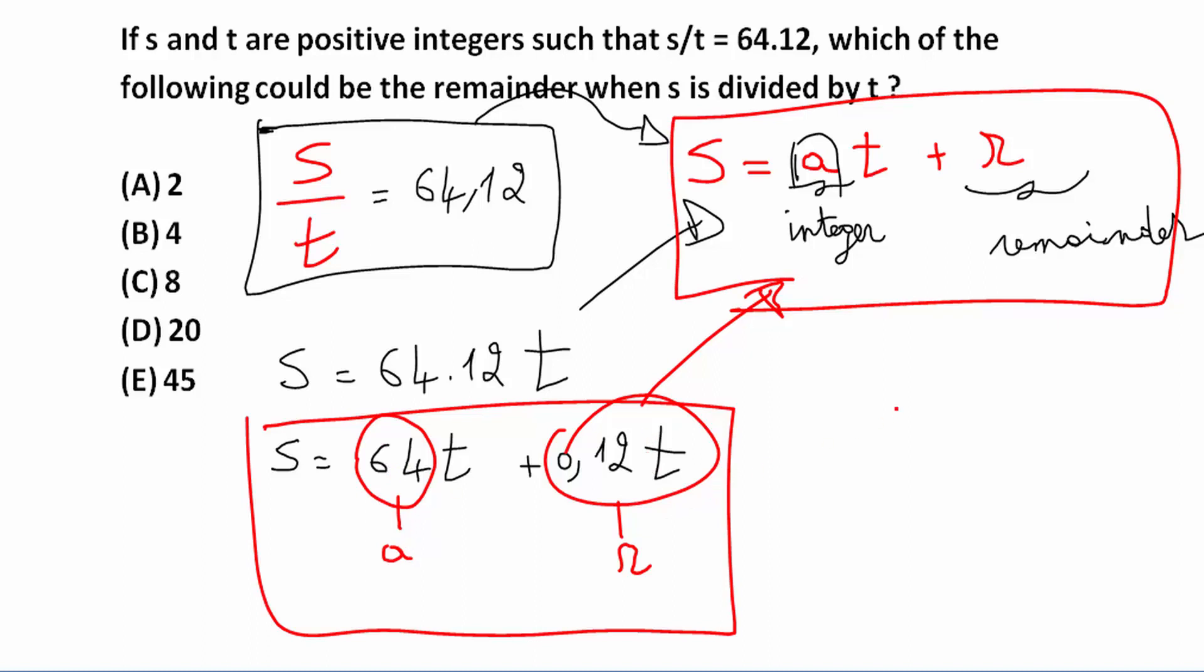So the remainder is equal to 0.12 T. And T is an integer. This is very important. So which one of these answers could be the remainder?